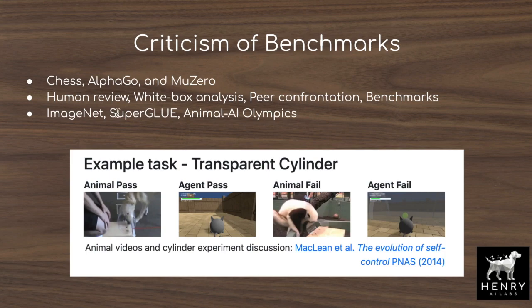More recently, AI has moved to multi-task benchmarks, which Chollet still takes issue with. SuperGLUE is a suite of tasks — including Yelp sentiment review classification, duplicate question detection in the Quora question pairs dataset, and natural language inference — used to evaluate natural language understanding. The text-to-text transfer transformer and fine-tuned GPT-3 perform well on these. Chollet's favorite benchmark described in the paper is the Animal AI Olympics, where the agent faces scenarios like routing around a transparent cylinder to reach food.